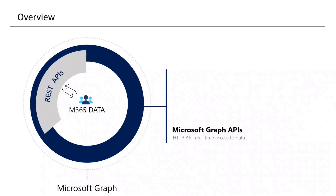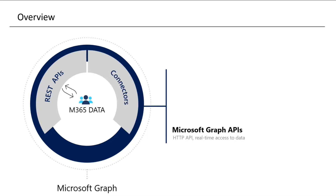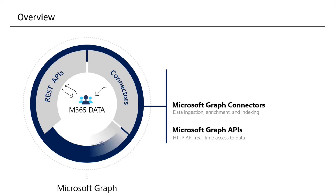REST APIs are throttled, which means they're not built for large data exports — you only have a certain limitation on how much data you can get in a given time frame. The second component is connectors, which are built to ingest data inside Microsoft Graph, bringing your on-premises data into Microsoft Graph to enable search-related scenarios and improve the overall experience on the Office portal.